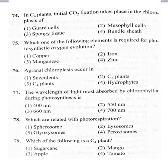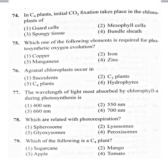75th bit: which one of the following elements is required for photosynthetic oxygen evolution? Photosynthetic oxygen evolution refers to the oxygen evolving complex or photolysis of water. Manganese and chlorine are the elements required for photolysis of water. The four options are copper, iron, manganese, and zinc. Manganese is the right answer — the element required for photosynthetic oxygen evolution.